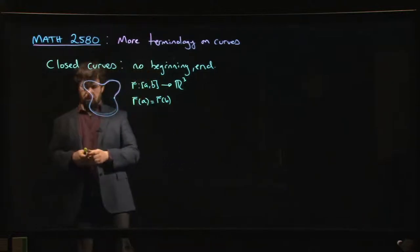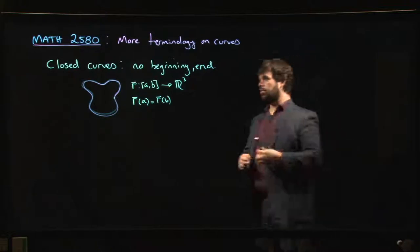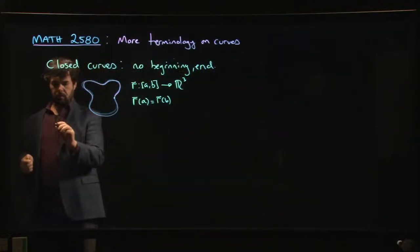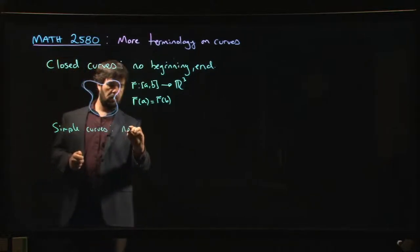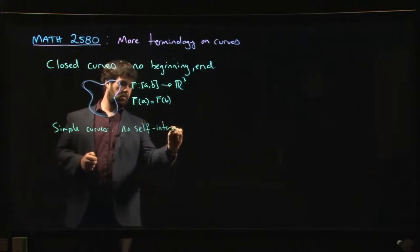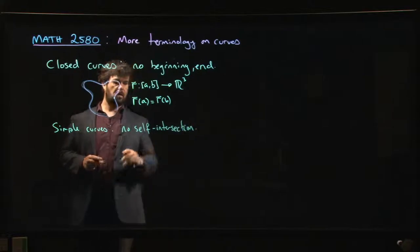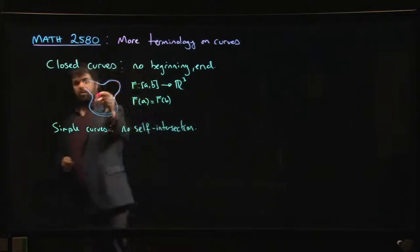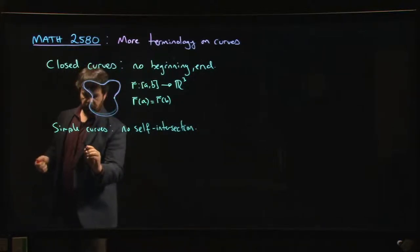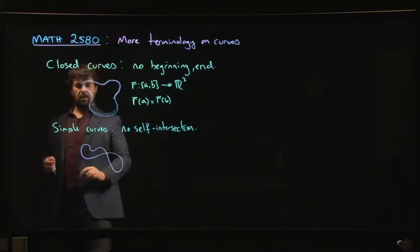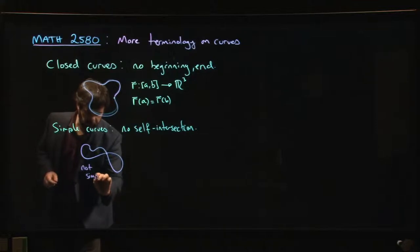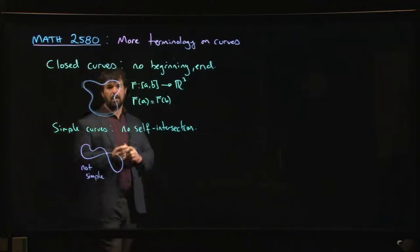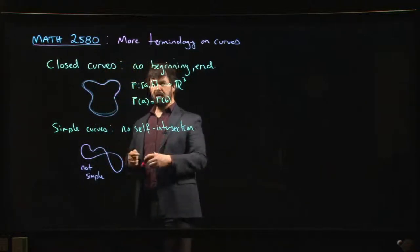We can also talk about simple curves. Simple curves have no self-intersections. The circle here is an example of a simple curve. A figure-eight, where you have a point of self-intersection, is not simple. It's still a closed curve, but it's not a simple closed curve.